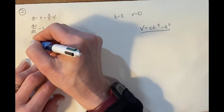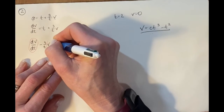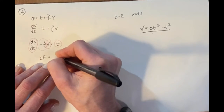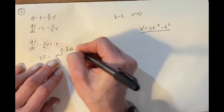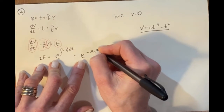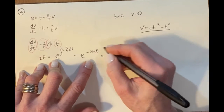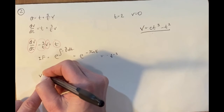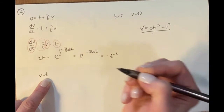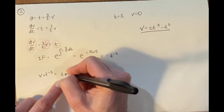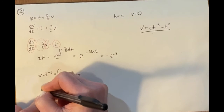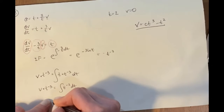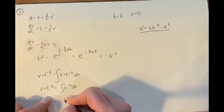The equation is in the right form with dv/dt and v as functions of t. The integrating factor is e to the power of ∫(−3/t) dt = e^(−3 ln t) = t⁻³. On the left-hand side we get v × t⁻³, and the right-hand side must be multiplied by t⁻³ and integrated — giving ∫t⁻² dt = −1/t + c.